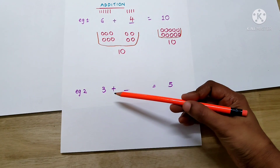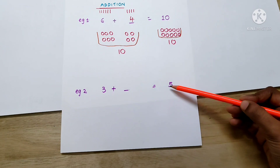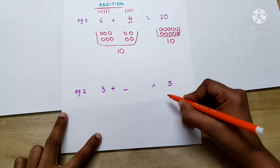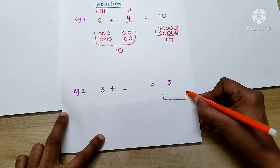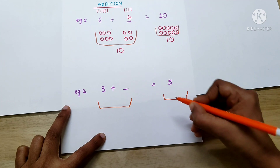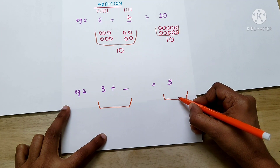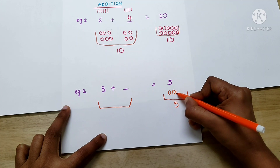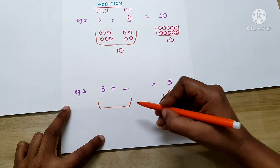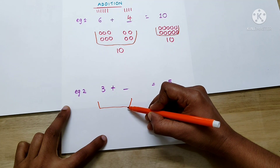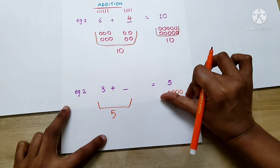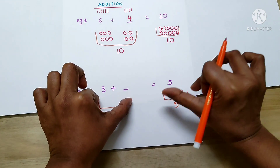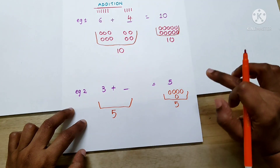Now let's consider this example: 3 plus dash equals 5. The first step is to draw a basket on either side of the equation. How many things are there in this basket? Yes, 5. So how many things should be there in the other basket also? Yes, 5 — because these two baskets should contain the same number of things, since there is an equal-to sign.